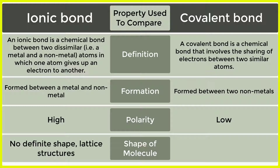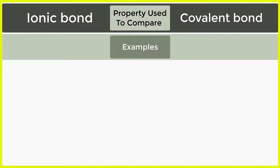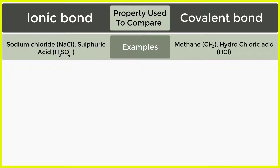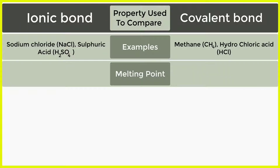Shape of molecule — Ionic bond: no definite shape, lattice structures. Shape of molecule — Covalent bond: definite shape. Examples — Ionic bond: sodium chloride (NaCl), sulphuric acid (H2SO4). Examples — Covalent bond: methane (CH4), hydrochloric acid (HCl).